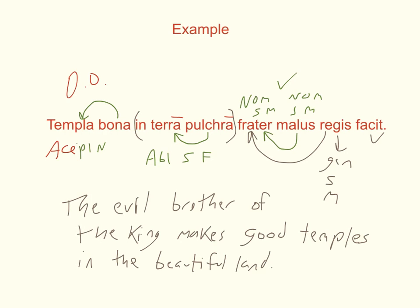So pulchra agrees with terra, malus agrees with frater, and bona agrees with templa. The grey arrow for regis is a genitive modification — adjectival, but not from a true adjective. If you don't know what that is, go watch the video on genitives. The full sentence: the evil brother of the king makes good temples in the beautiful land.